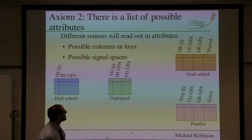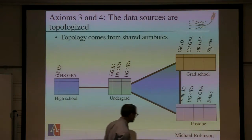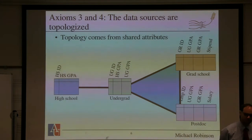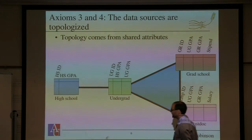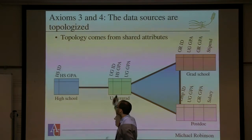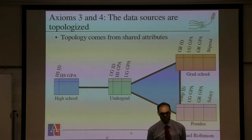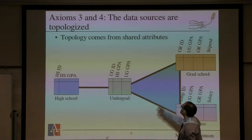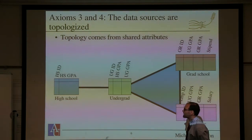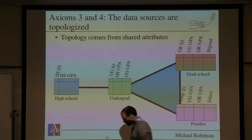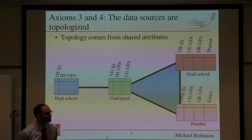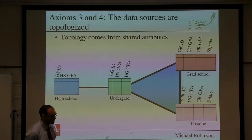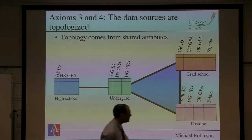These various tables have some subtables in common. The third axiom is that there's a topology that allows me to talk about shared attributes. In particular, the high school and undergraduate share an attribute — a column out of these tables — they share the high school GPA. They don't share the ID numbers per se. The high school does not share the high school GPA with any of the other institutions, but these other institutions do share the undergraduate GPA and possibly the graduate GPA. This topology corresponds to various kinds of subtables — smaller tables consisting of the columns that are in common.